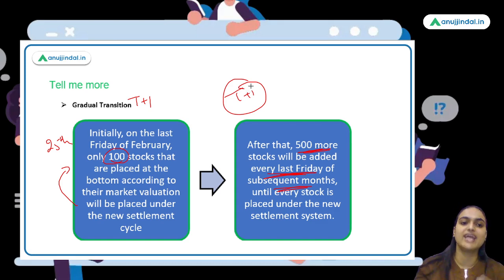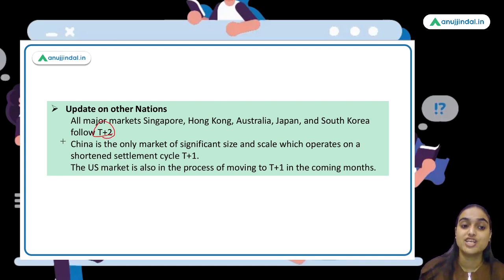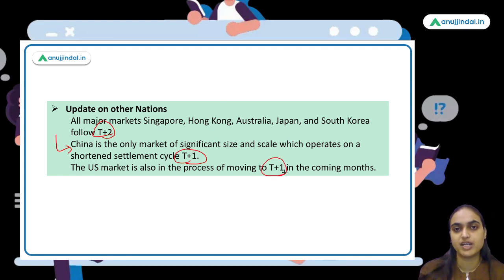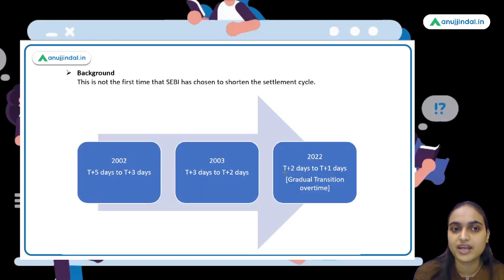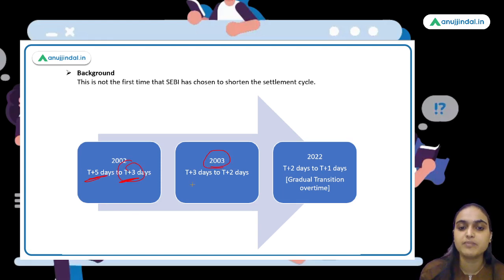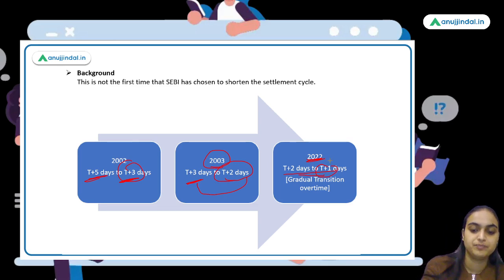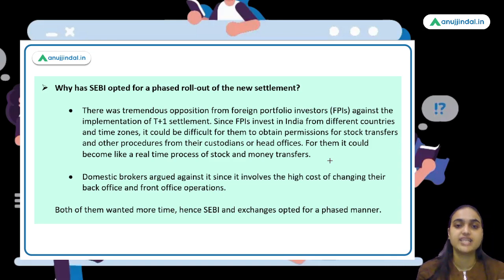All major exchanges of Singapore, Hong Kong, Australia, Japan, and South Korea are currently following T+2. After China, India is becoming the first nation to follow the T+1 cycle. The US might also soon move to T+1. A brief history: in 2000–2002 the settlement cycle was T+5; it was reduced to T+3 in 2002, then to T+2 in 2003, and now in 2022 it is being reduced to T+1.